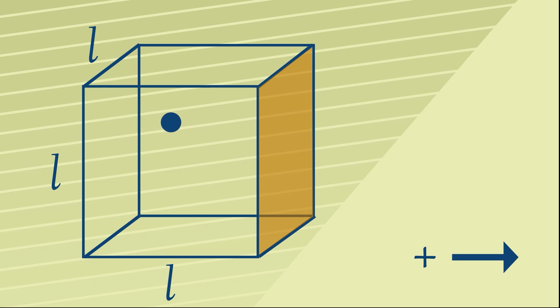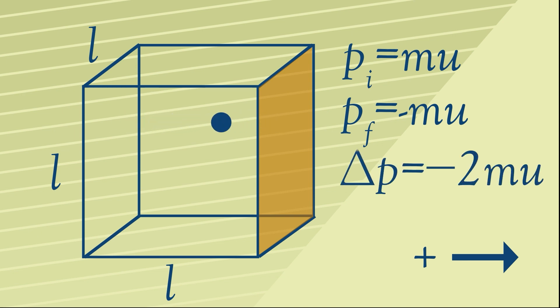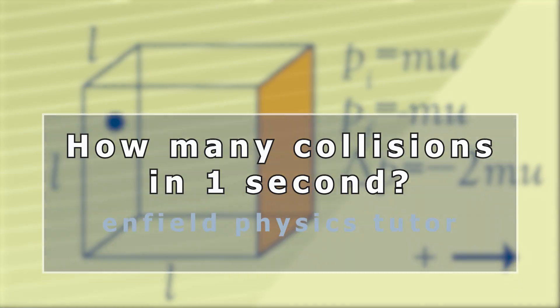This means that as it collides with the orange wall, the momentum is mu. After it leaves the wall, when the collision is over, its momentum is minus mu because its speed is now in the opposite direction, or its velocity I should say. The change of momentum will therefore be the final momentum minus the initial, which in this case is minus 2mu.